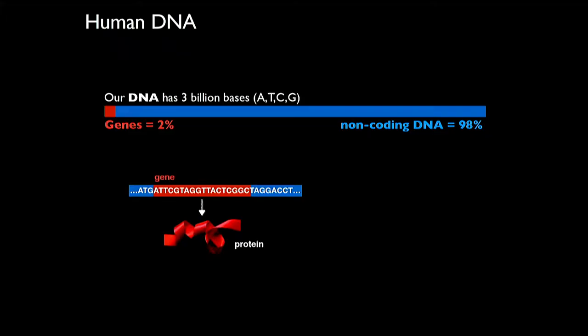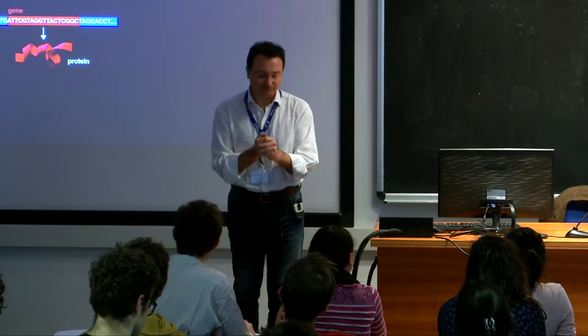Our DNA is three billion bases long — it's a string of three billion letters, six billion because we have two copies. When the Human Genome Project was accomplished, we knew the sequence and the genes. Humans have roughly 20,000 genes. Genes are a key portion of our genome — segments along the string which code for proteins. Proteins are the building blocks of cells. The system is self-contained because written somewhere is how to build what you need to work. Genes are called the coding part of our genome.